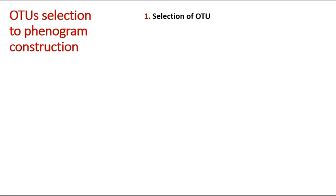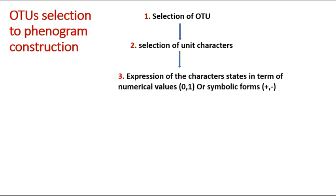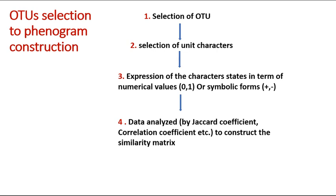From OTU selection to phenogram construction, here are the steps we perform in numerical taxonomy. Step 1: selection of OTU. Step 2: selection of unit characters. Step 3: expression of character states in terms of numerical values like 0 and 1, or symbolic forms like plus and minus. Step 4: data analyzed by different coefficients like Jaccard coefficient and correlation coefficient to construct the similarity matrix. Step 5: construction of phenogram by clustering.